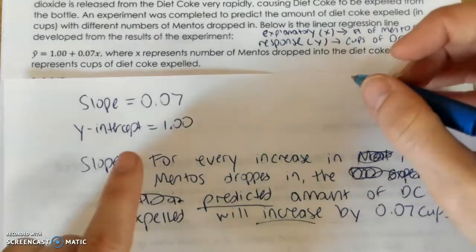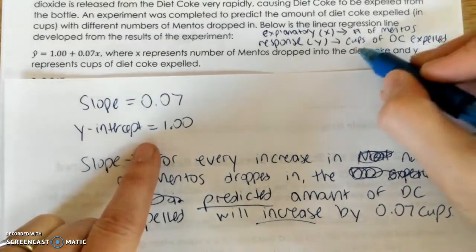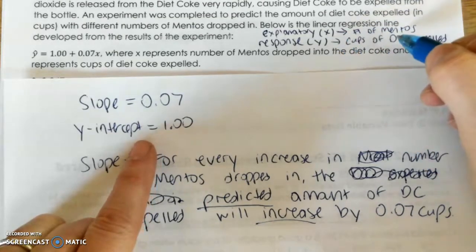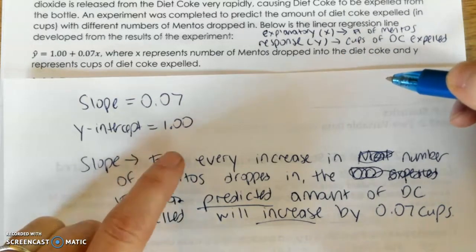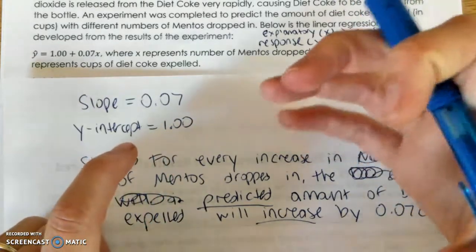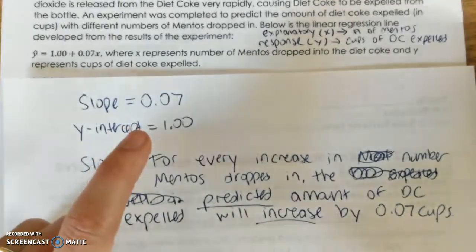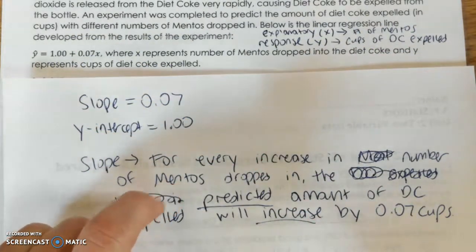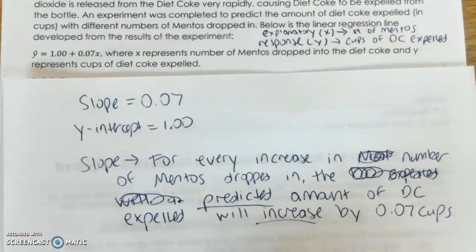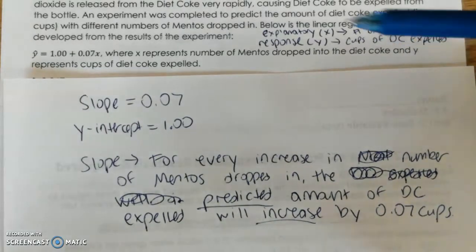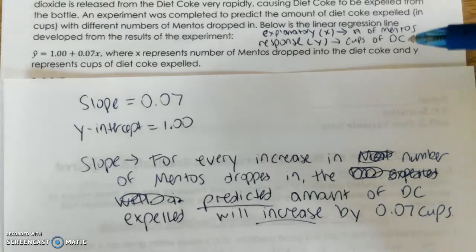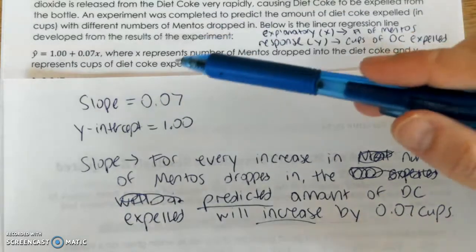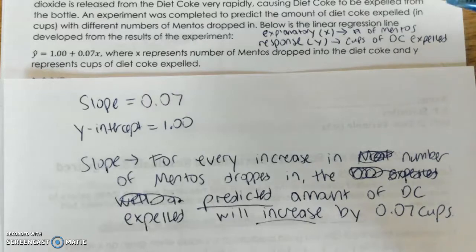All right, and then our Y-intercept, meaning can X be 0? So does this make sense for it to be 0 Mentos dropped in and still have a cup of Diet Coke expelled? I think if we have a Diet Coke that's just sitting on my counter, right, and I don't do anything to it, I don't put any Mentos into it, would one cup of it just suddenly come out of the bottle? I don't think so, right, unless I knock it over, unless I'm shaking it up, but basically I don't think that the Y-intercept has any meaning in this context because the Diet Coke would be stationary unless something happened to it, right? So with 0 Mentos dropped in, I wouldn't say that 1 cup will be expelled, right? So you need to think about when X is 0, what does that mean for the equation or for the model?